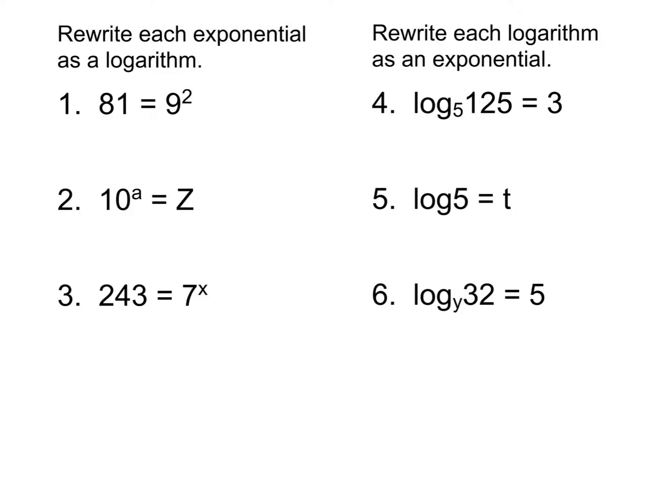So first up, we're going to take a look at converting between exponential and logarithmic forms here. This is good ongoing practice. For that first one, you notice our base is 9, so it's log base 9. Log always equals the exponent, so it's going to equal 2. Therefore, it has to be log base 9 of 81 equals 2.